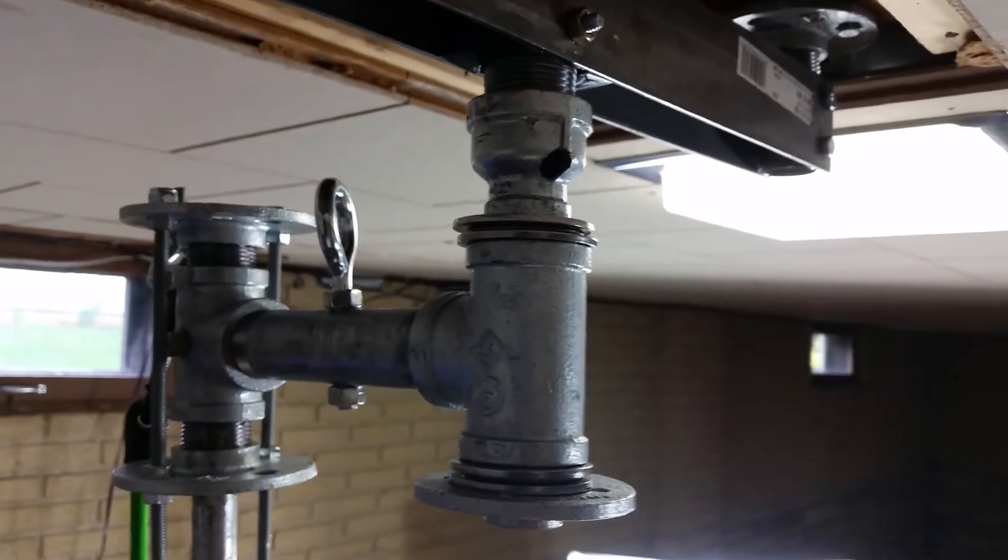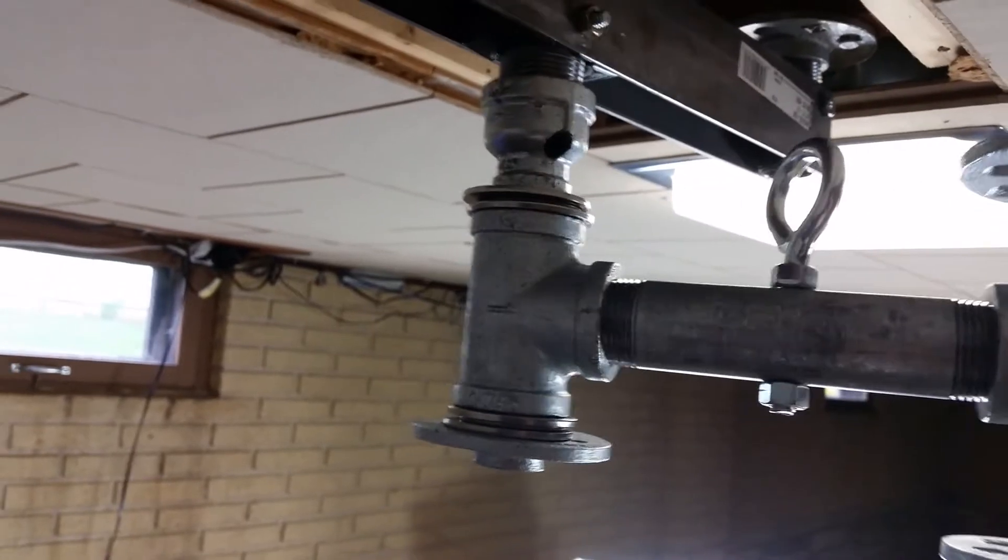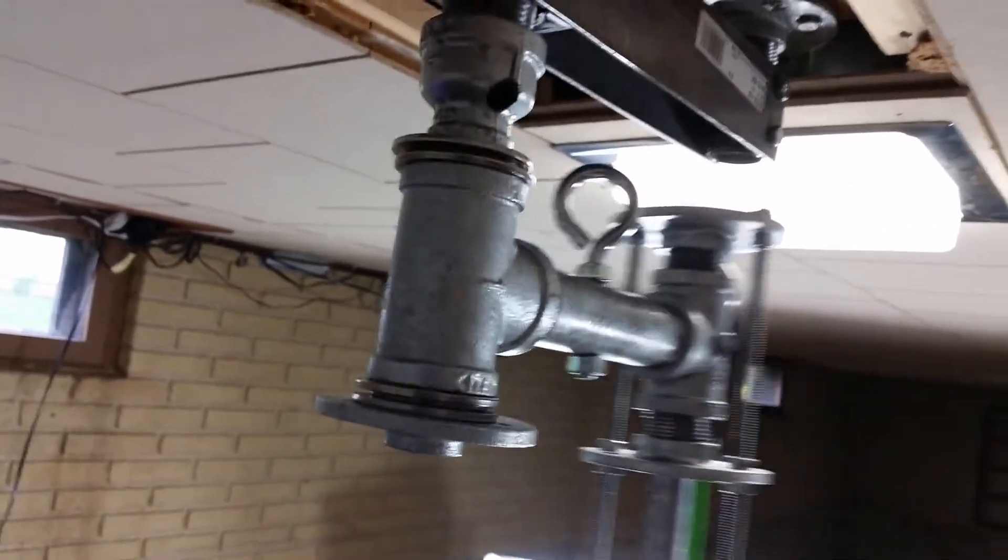This is what the swivel looks like up close. There's a few thrust bearings in between the two washers on the top and bottom, and I'm going to go more into detail about how this works in the next video.